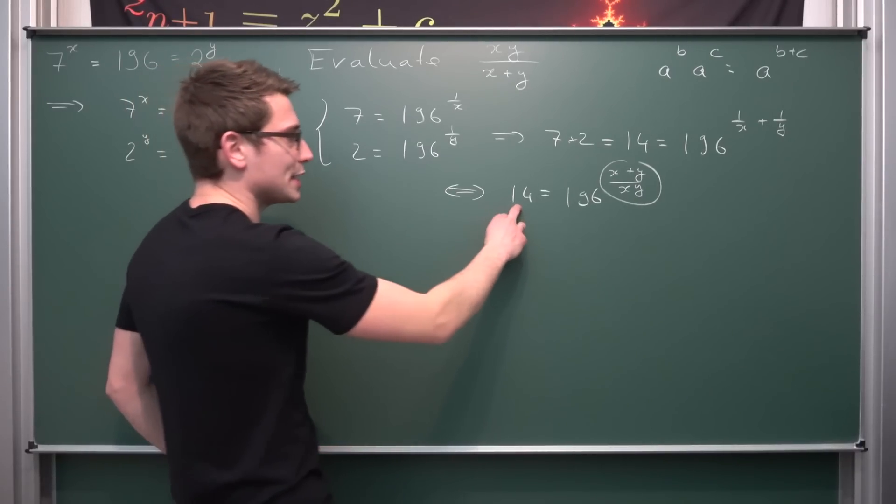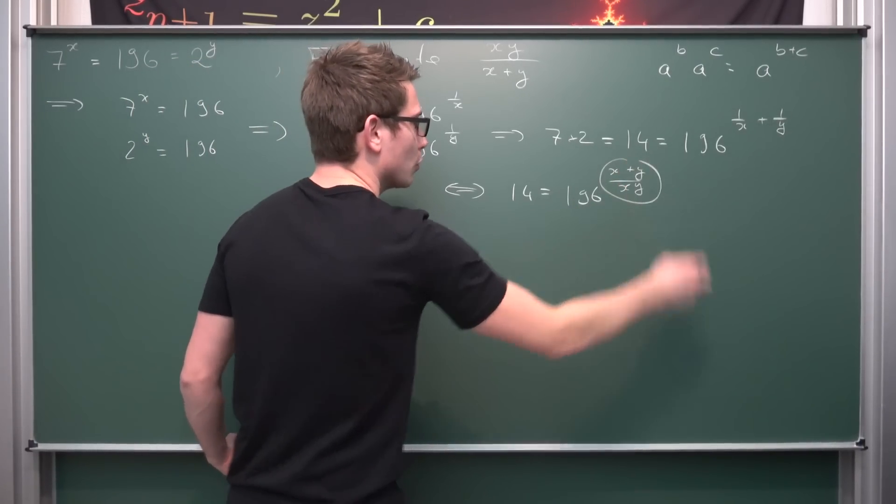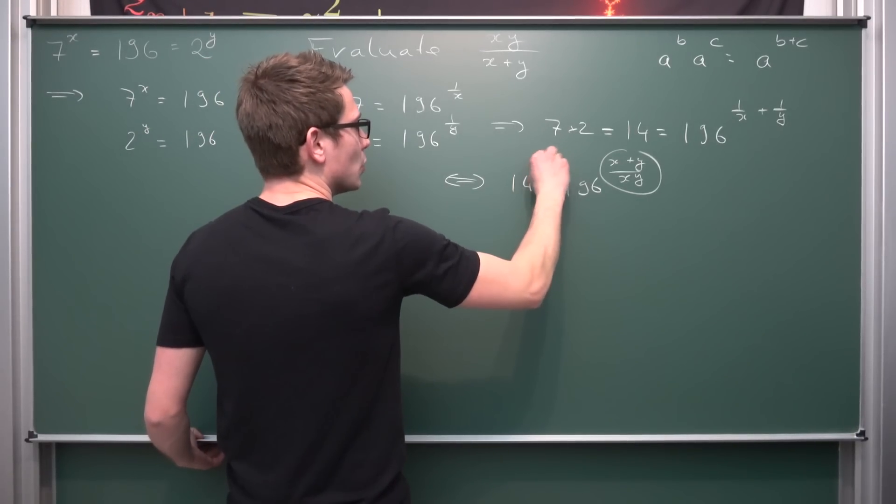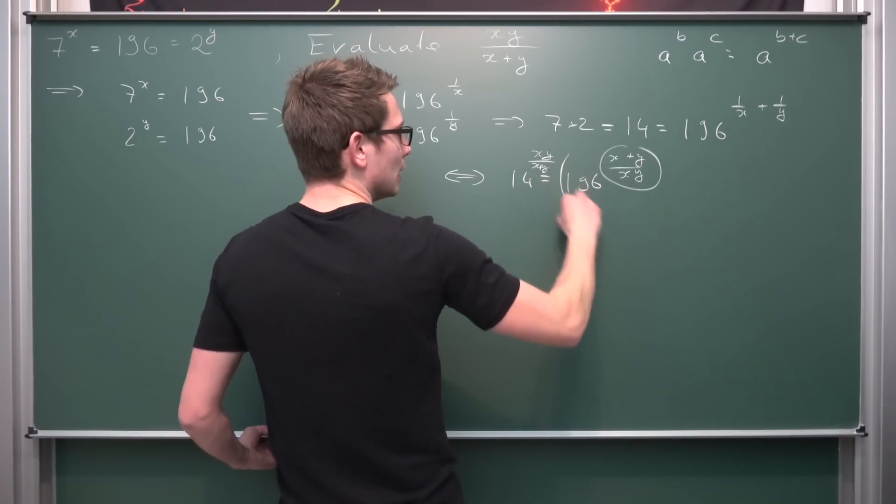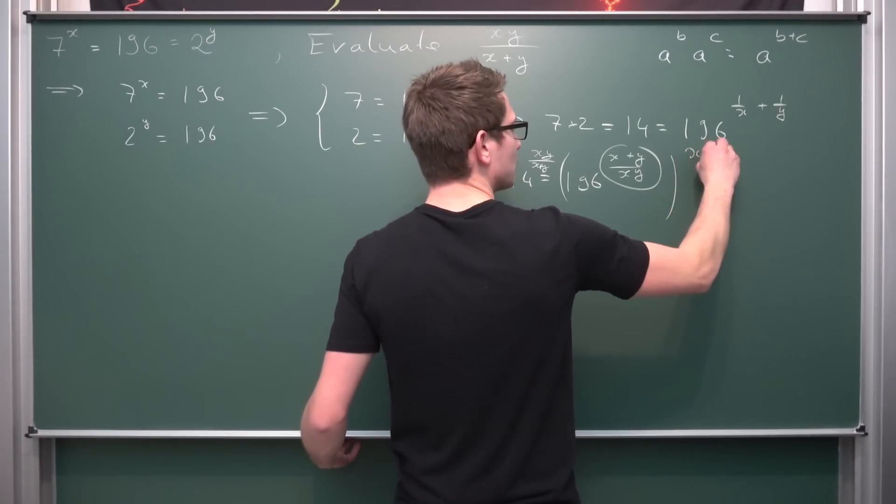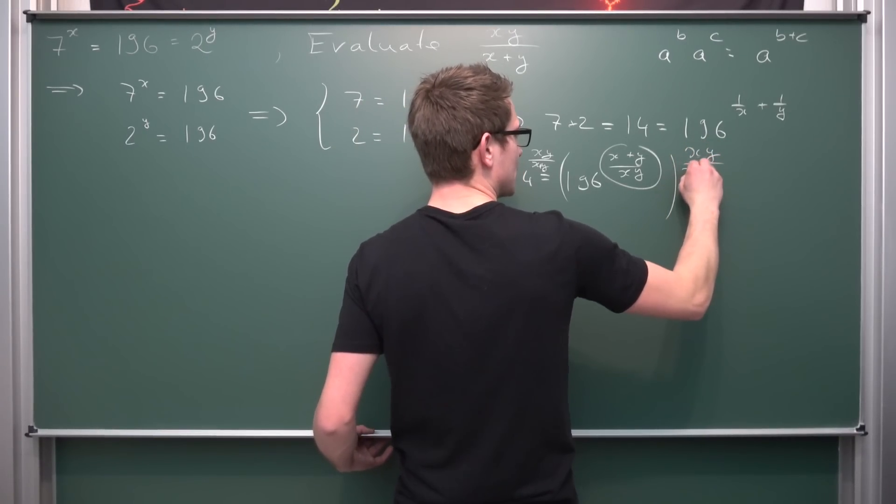What we can do is raise both sides by the reciprocal of what we have here. By raising it to the x times y divided by x plus y power. Same thing here. x times y divided by x plus y.